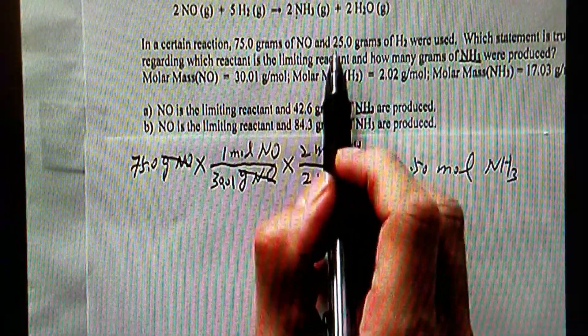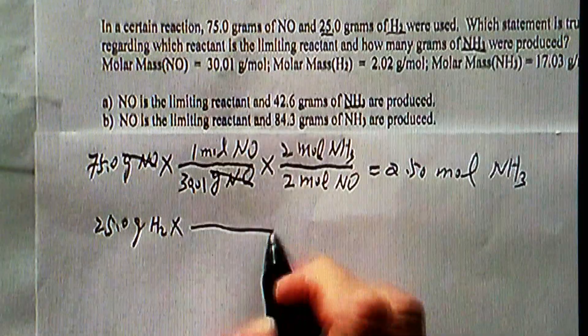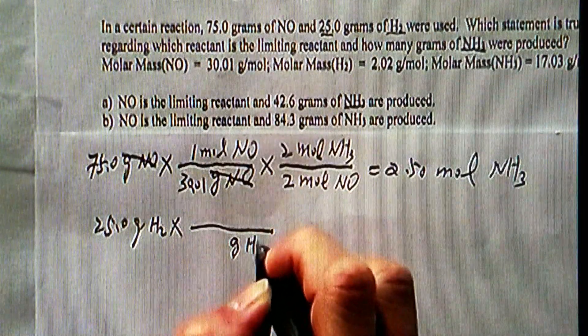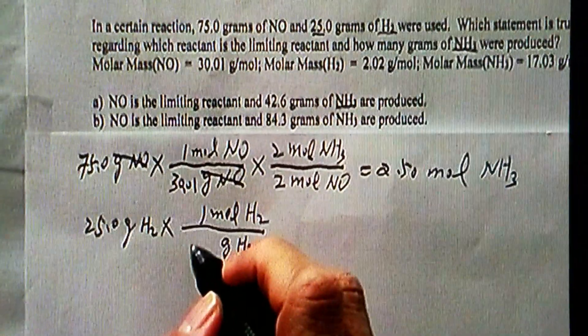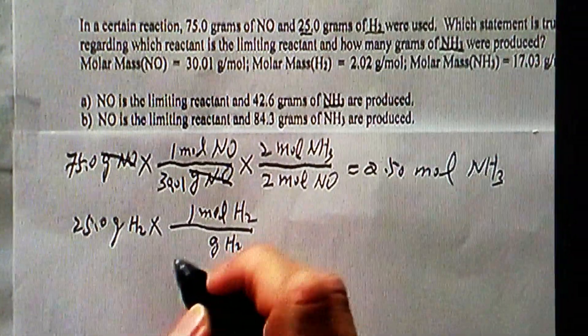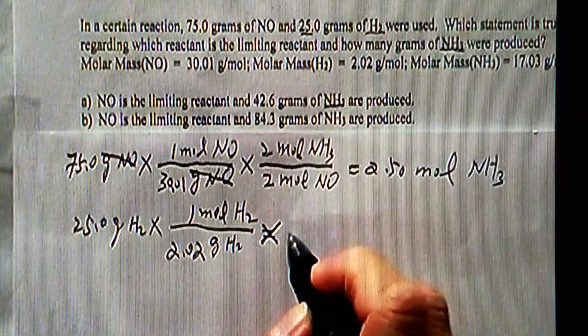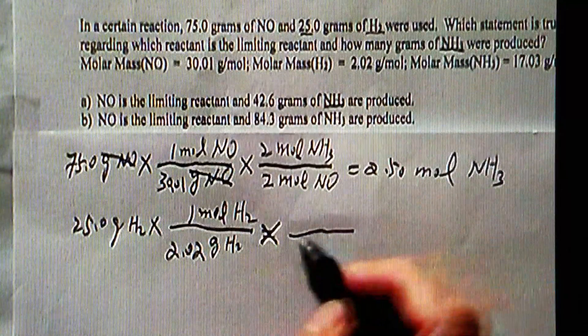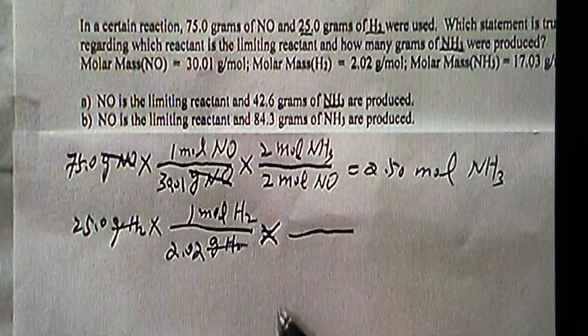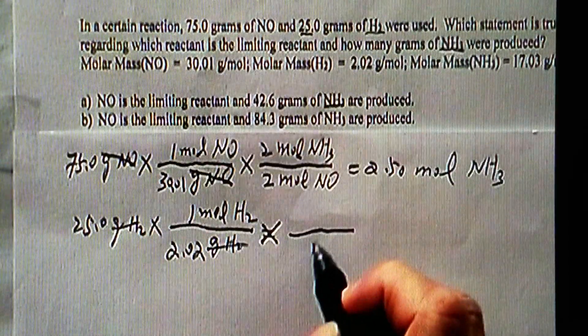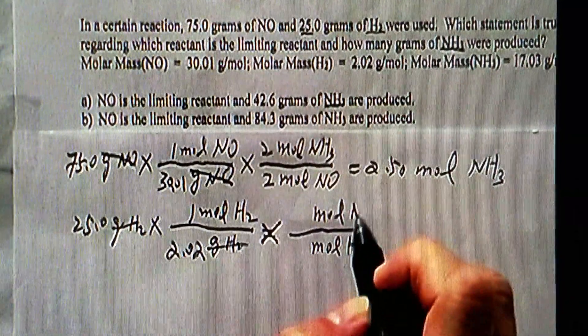We'll do the same for hydrogen using hydrogen's value. 25 grams of H2, using the molar mass converting from grams of H2 to moles of H2, and that should be 2.02. Now we are not done yet. Grams H2 cancelled. We should have moles of H2, convert from moles of H2 to moles of ammonia.